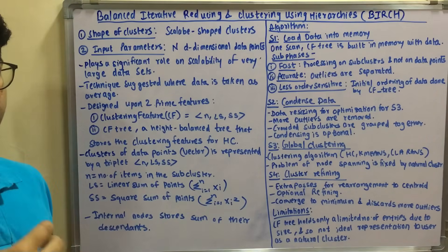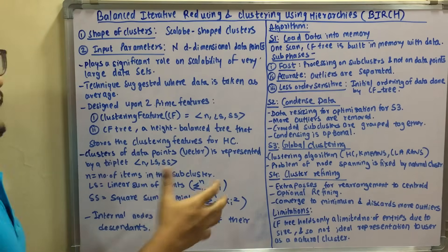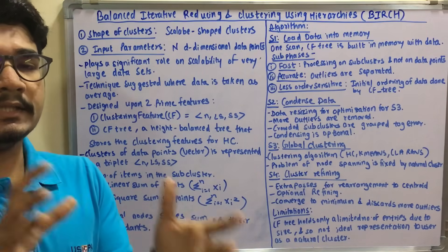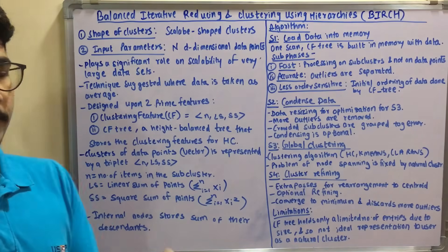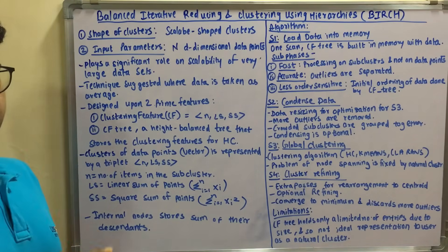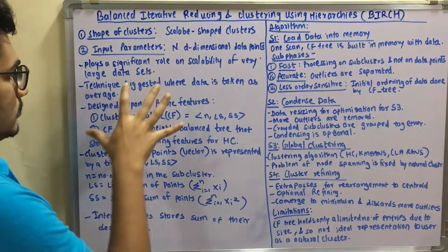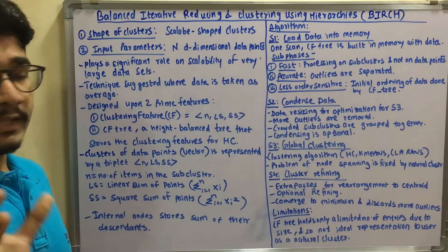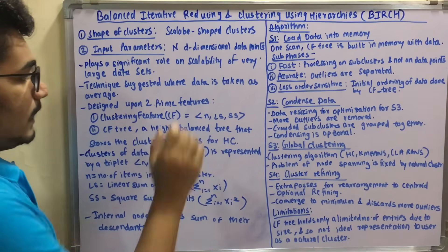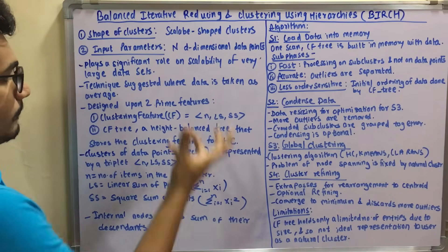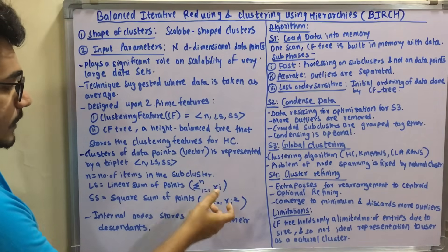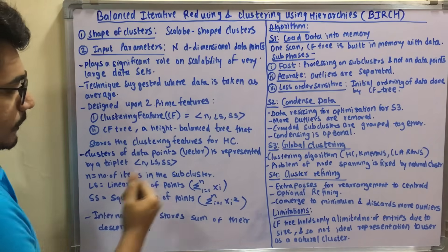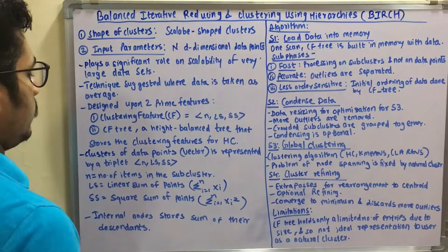This technique is suggested where the input data is taken as an average and not the entire raw data. The raw data is first divided into averages or their mean, then put for sampling. BIRCH is designed based on two prime features. The first is the Clustering Feature (CF), represented as a triplet (N, LS, SS): N is the number of items in the subcluster, LS is the linear sum (summation of xi from i=1 to N), and SS is the square sum (summation of xi² from i=1 to N).